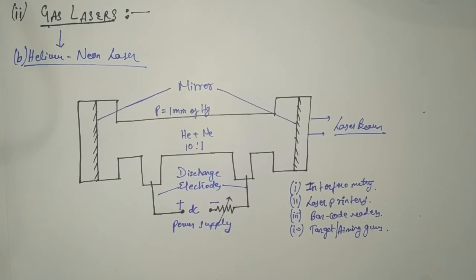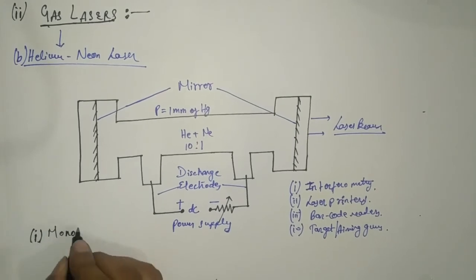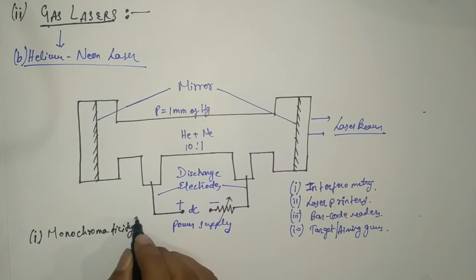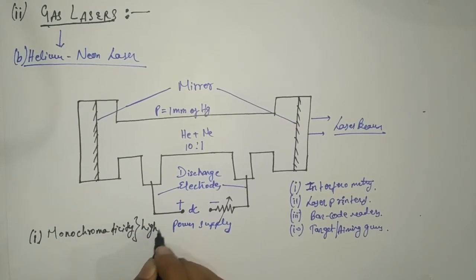Let us shortly discuss the advantages of gas laser. That is we have studied helium neon laser in comparison to solid state laser, that is ruby laser. Number one is gas lasers, specifically helium neon lasers, have higher degree of monochromaticity and directionality. So monochromaticity is higher.